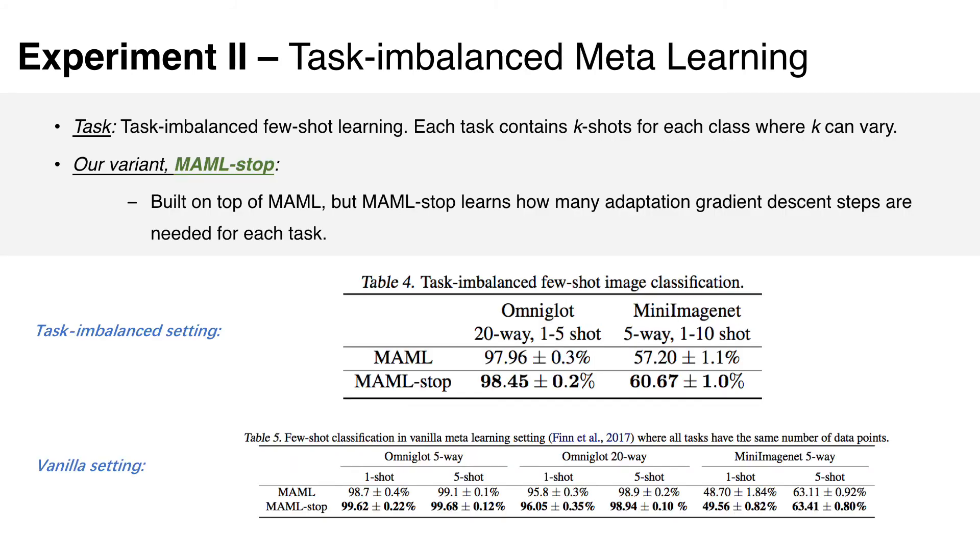The second experiment is task-imbalanced meta-learning. In the few-shot learning task, each task contains k-shots. In the task-imbalanced scenario, the number of shots in each task can be different. That means some tasks have more samples and some have less samples. Built on top of MAML, we propose MAML-stop, which can learn how many adaptation steps are needed for each task. The results on benchmark datasets show that learning the adaptation stop time can improve the performance. Besides, we also test its performance on the vanilla setting, where all tasks have the same number of examples. There is still improvement but not as significant as the imbalanced setting.